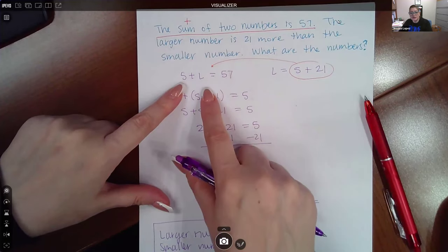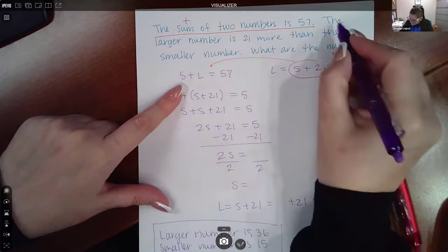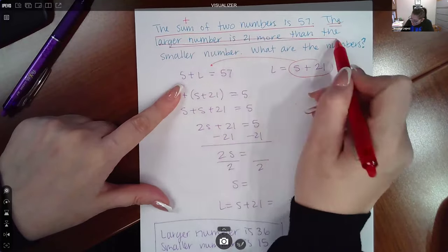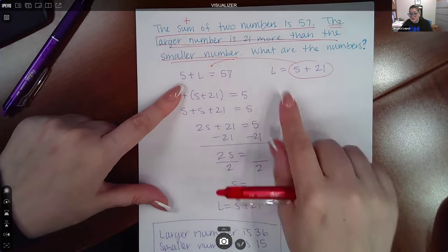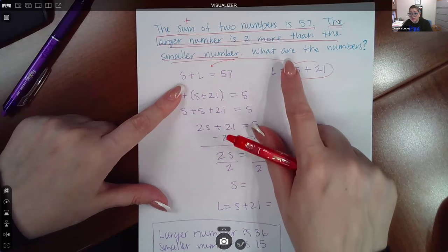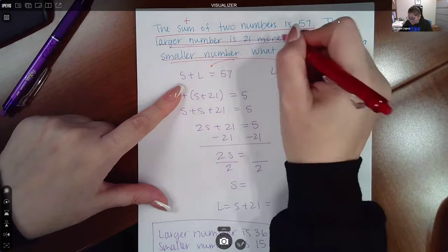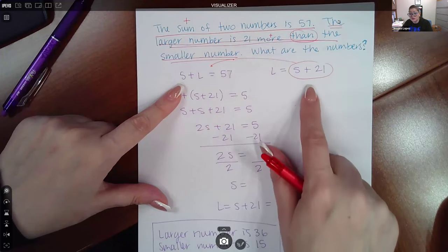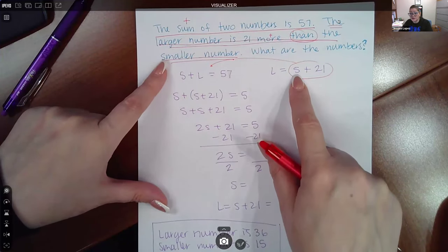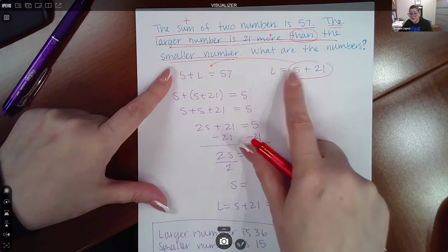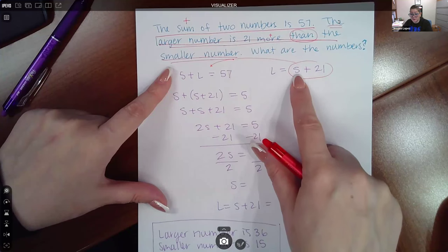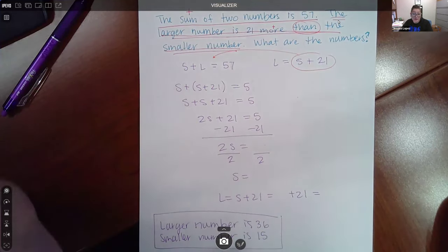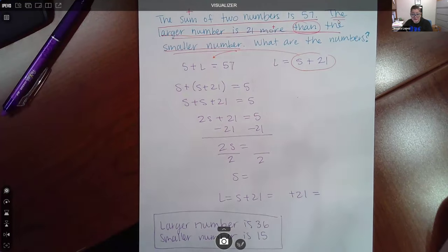That top sentence gives me this first equation. The second sentence, the larger number is 21 more than the smaller number. That tells me the larger number is 21 more than, there's that word again. We know more means add, but because of the word then, the 21 goes behind the plus sign. So the smaller number would go in the front. This is saying the larger number is 21 more than the smaller number. The only reason why we have to go backwards is because of that word then. If that word then was not there, it would be 21 plus S.